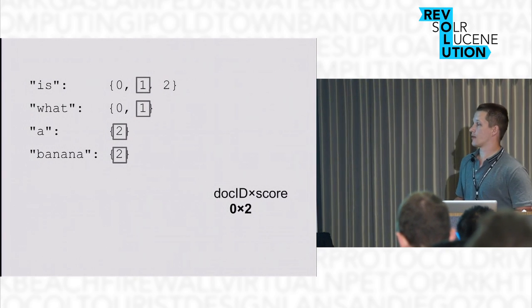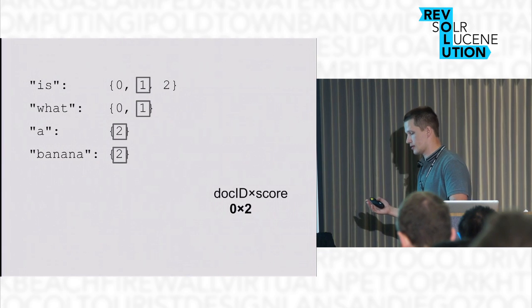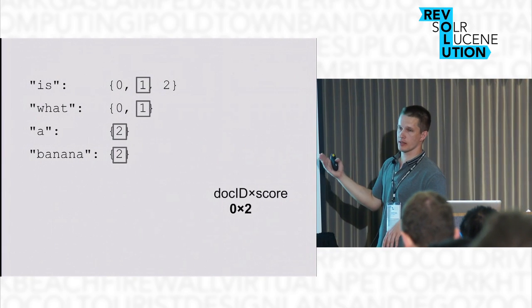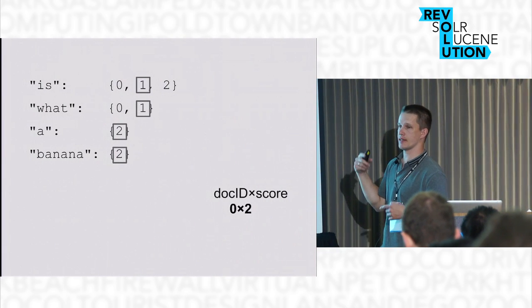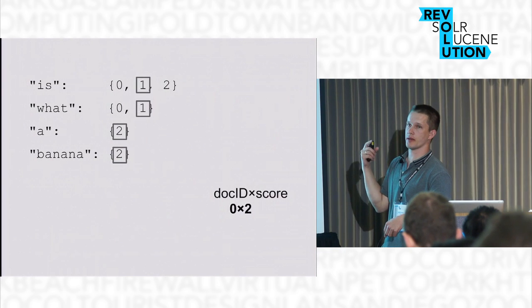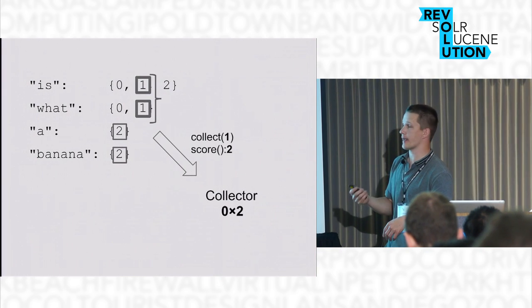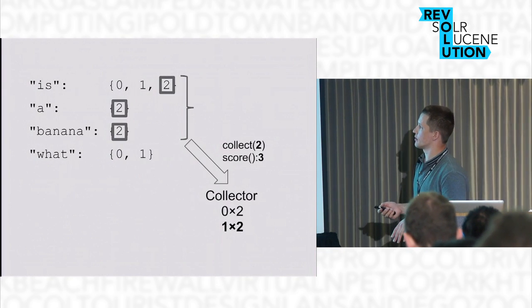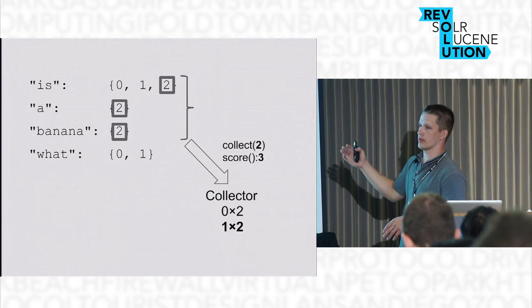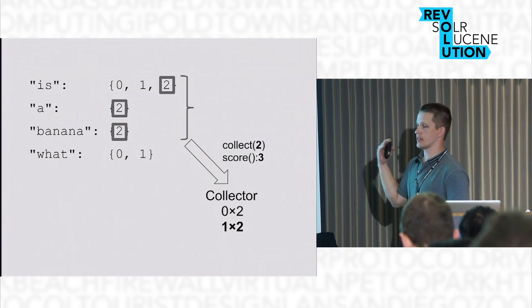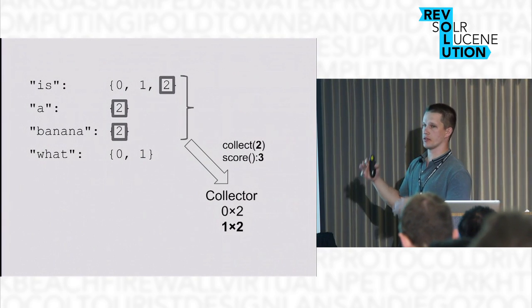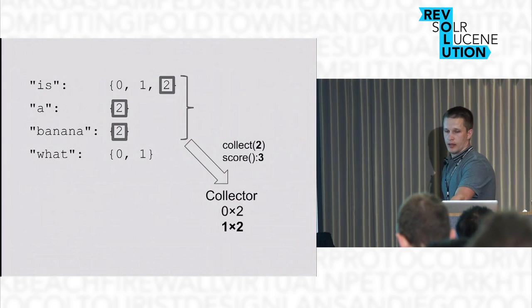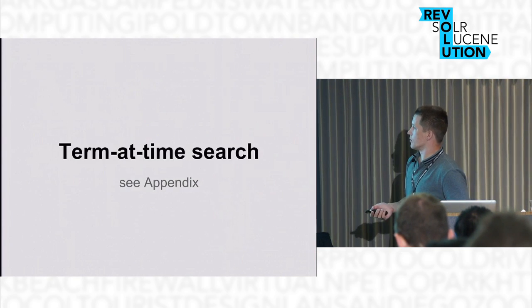After we collect a result, we need to move scorers onto the next document and then reorder scorers by document ID again. This search is really fairly simple — after processing every document, we need to reorder scorers.